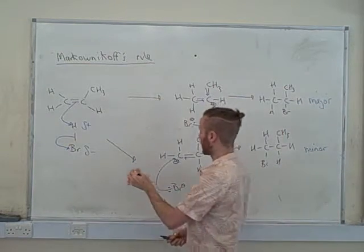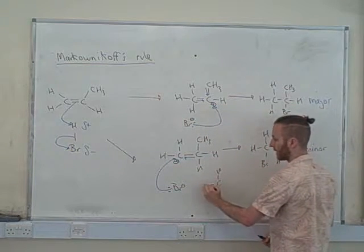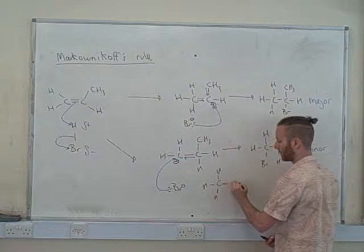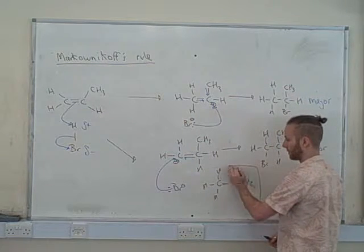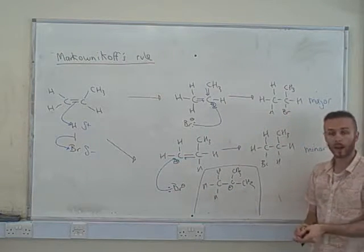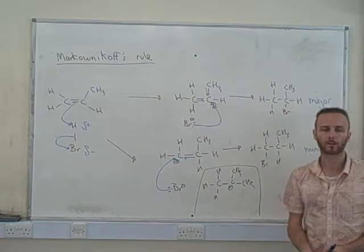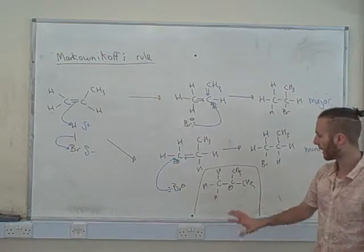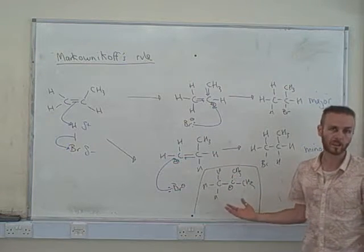If I had, let's switch this round now, let's say I had a carbocation which looked like this. Where the positive charge was on a carbon with three carbons adjacent, have a little think, try and make a prediction. Do you think this would be a fairly stable ion or do you think this would be a very unstable ion?